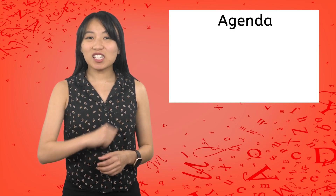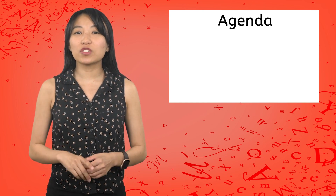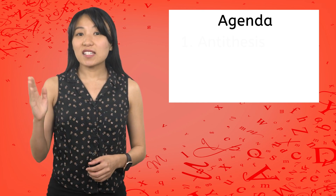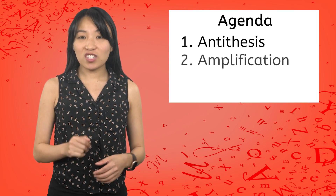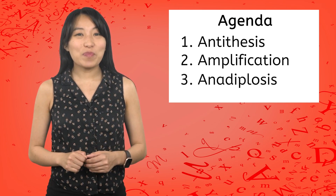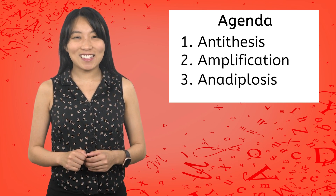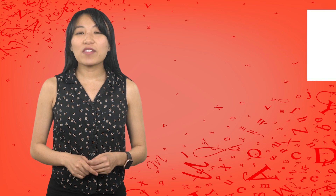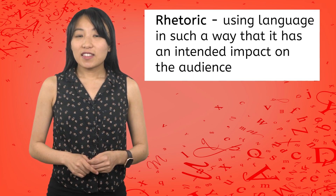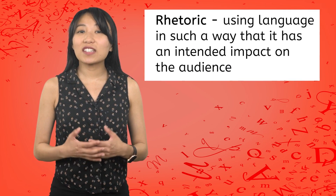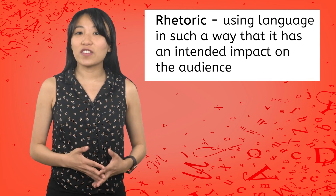In this lesson, you can expect to explore three rhetorical devices. We'll look at antithesis, amplification, and anadiplosis with the help of some feathery friends. This unit so far has been about the art of rhetoric. This involves using language in such a way that it has an intended impact on the audience.